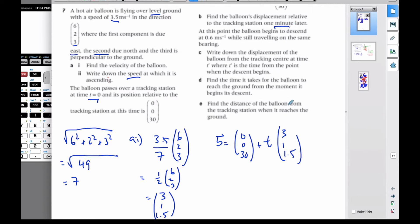Now, this is in minutes, but the velocity is in seconds. So my b is going to be (0, 0, 30) plus 60 times (3, 1, 1.5). When I do that, I get (180, 60, 120) as the displacement vector.